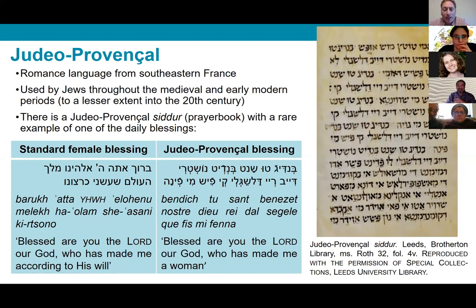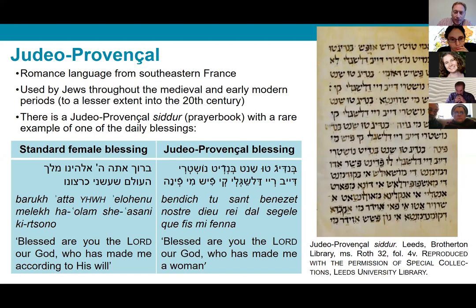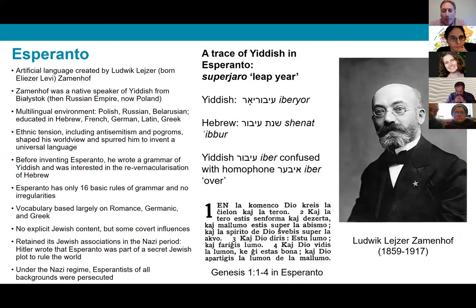So basically we have in this 15th century Siddur from southern France perhaps the earliest example of what we might call a feminist prayer book — something almost totally unique in Jewish history until very recently. And finally, as promised, Esperanto.